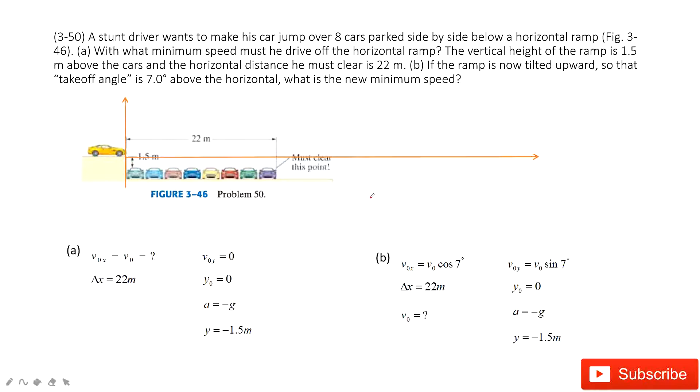This is a projectile motion problem, but we need to find the initial velocity. A driver wants to make his car jump over 8 cars parked side by side below a horizontal ramp. What minimum speed must he drive off the horizontal ramp? Horizontal means the initial velocity only has an x component, the y component is 0.